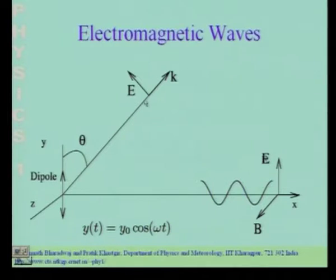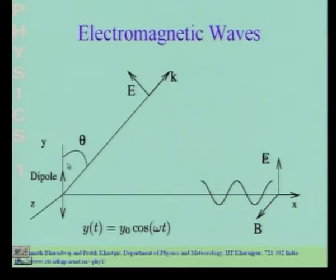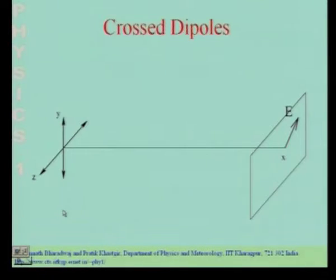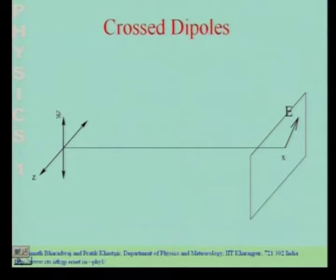If you go to some other direction, you are going to have the wave propagating outward from the dipole. The electric field is going to be along the direction of the dipole projected normal to the line of sight, and the magnetic field is perpendicular to both of these. This is the electromagnetic field pattern you get when you have a single dipole oscillating. We then moved to a situation where we have two crossed dipoles — one aligned along the y axis and another along the z axis.